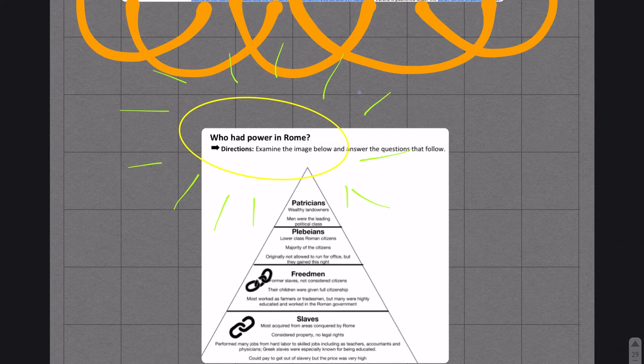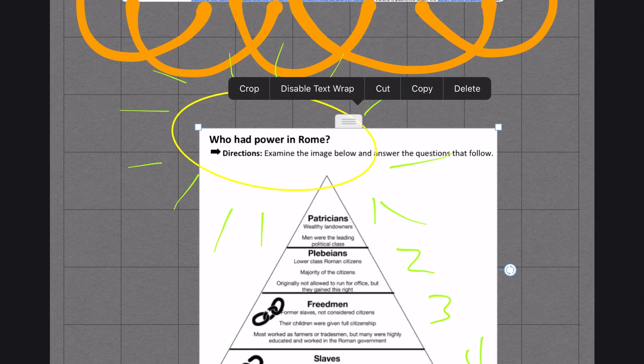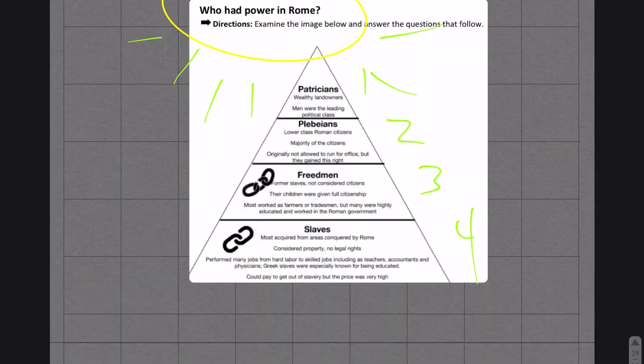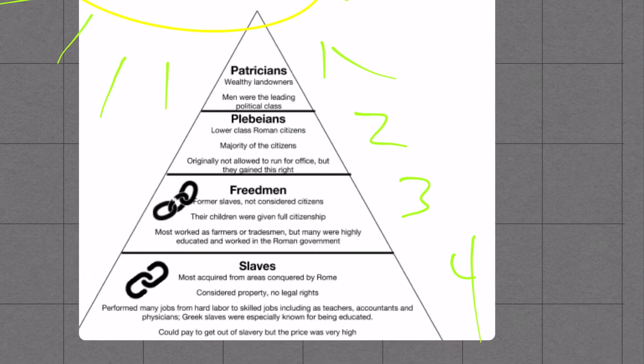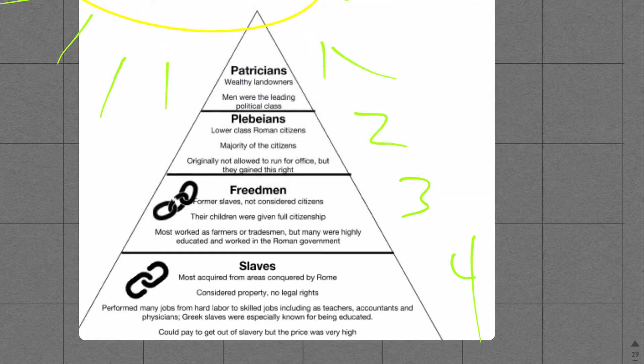Then we have the plebeians below them. This is like the top, this is the next one down, these are our tiers. Plebeians, the next is the lower class of Roman citizens. I'm going to make this a little larger, it's actually a little difficult to see there. This is the majority of the people in this number two category.